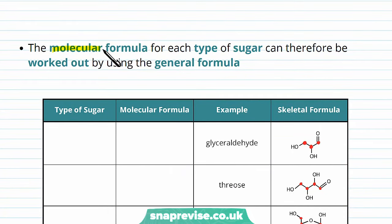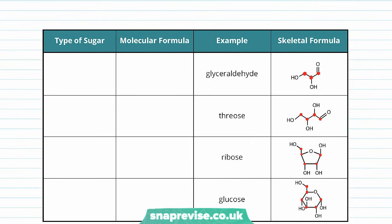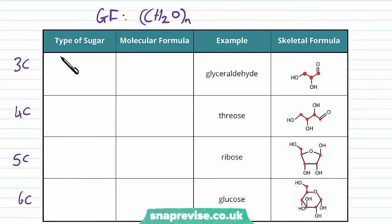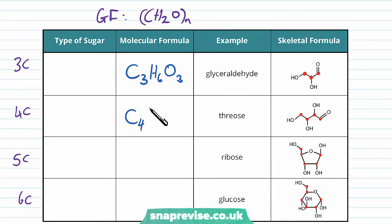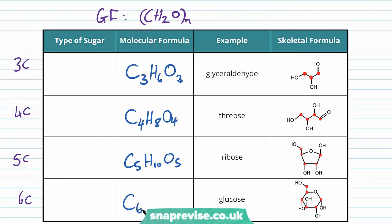Using the general formula (CH₂O)n, we can work out the molecular formula for each type of monosaccharide by finding the actual number of atoms. For three carbons: C₃H₆O₃. For four carbons: C₄H₈O₄. For five carbons: C₅H₁₀O₅. For six carbons: C₆H₁₂O₆. The pattern is that carbons and oxygens are always the same number, but hydrogens are always double. Different monosaccharides thus have different numbers of carbons.